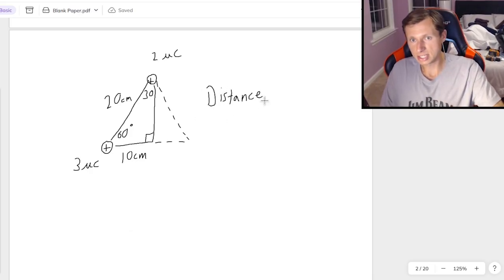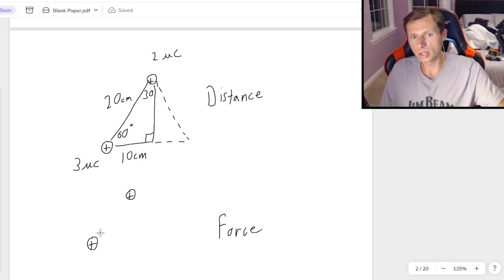This is the right triangle for distance. We have a distance right triangle, and then we're about to draw a force right triangle. By the way, the way I'm doing this is optional. There's many correct ways to do it, but this is the way I'm telling you to do it.